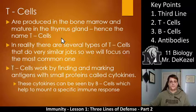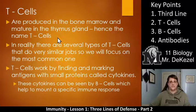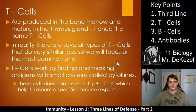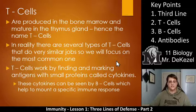T-cells are produced in the bone marrow and are matured in the thymus gland — that's why they're called T-cells. There are many different types of T-cells that do very similar jobs, so we're going to focus on the most common job, which is finding and marking antigens. The beginning of the third line of defense is the T-cell response, and it happens soon after the inflammatory response. T-cells go and find and mark those antigens, marking them with small proteins called cytokines, which can be seen by B-cells.